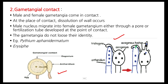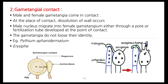In Oomycetes, the female part is called oogonium and the male gamete is called antheridium. These two come in contact and the male nucleus from the antheridium migrates into the oogonium, forming a 2N condition, and later a sexual spore is formed. Similarly in Ascomycetes, the female gamete is called ascogonium and the male gamete is antheridium. When they come in contact, a fertilization tube called trichogyne is formed through which the male nucleus moves into the ascogonium; then meiosis occurs and asci are formed.